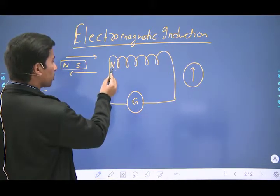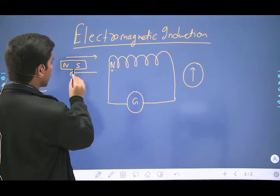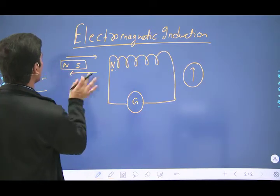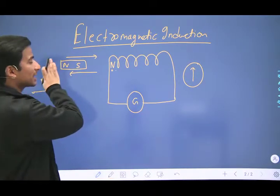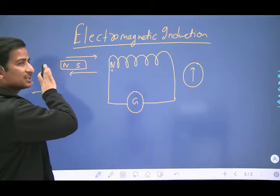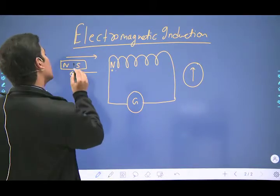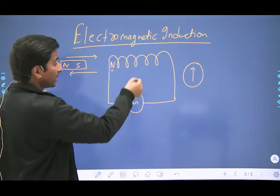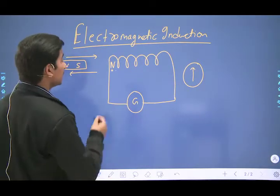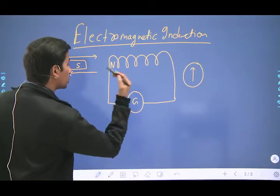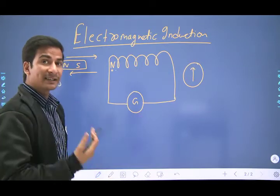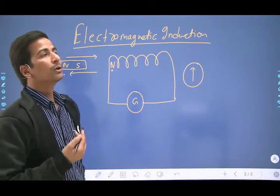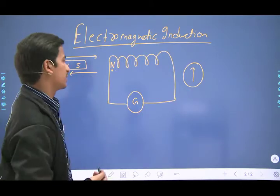Aap dekh rahe honge ki agar yahi pole north ban jata hai, to south pole automatically is ki or attract hote aata hai — there is no need to do work on this magnet. South pole automatically north ki or aayega aur uske badle aapko current mil rahi hai. It means your coil is producing electrical energy without cost of any work — jo work-energy theorem ka violation hai.